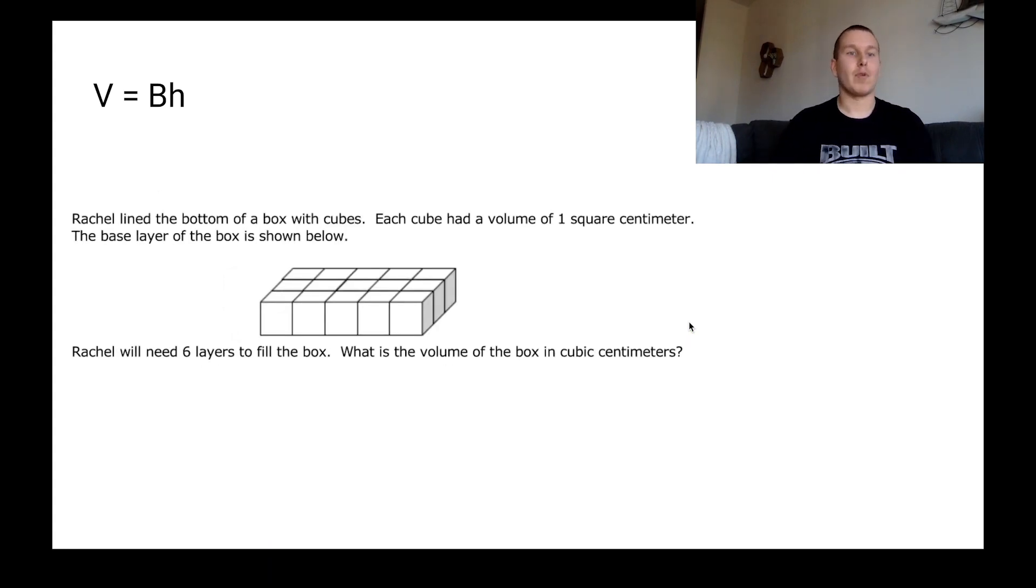So in our next problem, it says Rachel lined the bottom of a box with cubes. Each cube had a volume of one square centimeter. The base layer of the box is shown below. Rachel will need six layers to fill the box. What is the volume of the box in cubic centimeters? So this one, it kind of looks like to me right off the bat, because it's telling me about the base over here, that we're going to want to use V equals big V times little H. So we got to find out a couple of things. I know that we're looking for the volume. So we don't know that. The base is written right here. So we can see what the base is going to be. We'll count that up in a second. And then the height is going to be how many layers we have. So that's how many times we're going to stack this on top of each other. So the layers is going to be six. And it looks like we're using centimeters. So I'm going to label it.